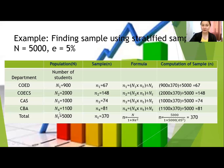First, you find the total sample size using Slovin's formula: n divided by (1 plus n times the margin of error squared). Substituting: 5,000 divided by (1 plus 5,000 times 0.05 squared), you get a total sample of 370.